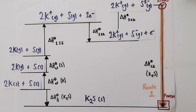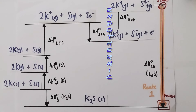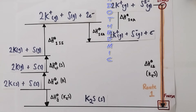You may notice that the second electron affinity is actually an endothermic process rather than an exothermic process. That's because we're now trying to push electrons onto an already negative species, and there's going to be repulsion between those negative S⁻ ions and the incoming negative electrons. So it requires energy to add those additional electrons onto an already negative species, and hence that process is endothermic, not exothermic in nature.